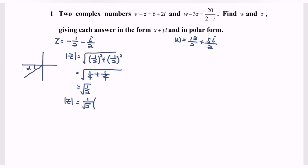Remember to rationalize the denominator. So the modulus of z equals square root of 2 over 2.